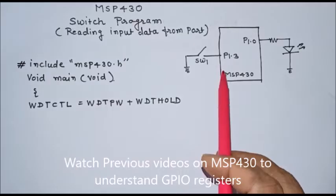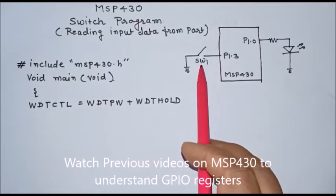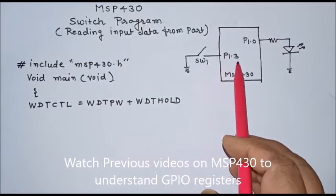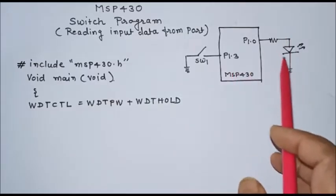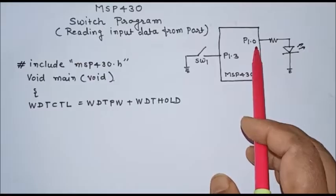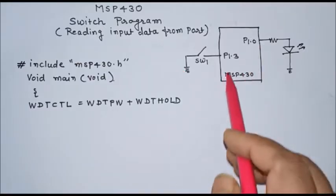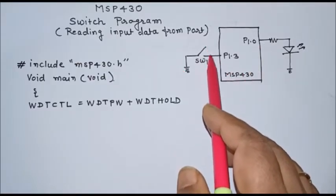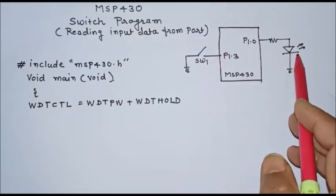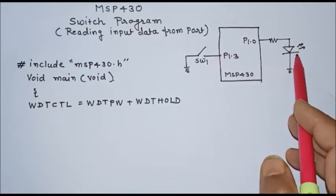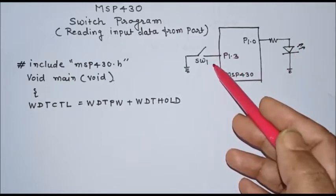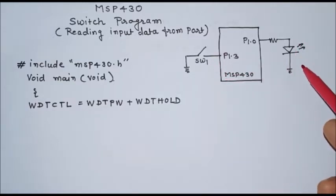Program to read data from a switch connected at port terminal P1.3 and send output on the LED connected at port P1.0. We will write a program such that when the switch is pressed by the user, this LED will glow for a few seconds.